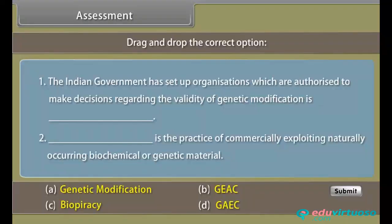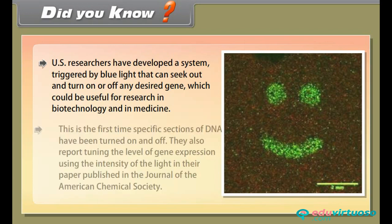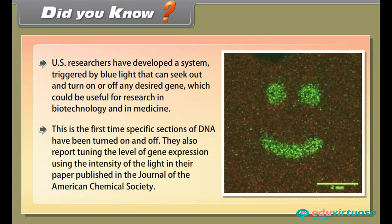Before proceeding further, let us assess how much you have learned. Drag and drop the correct option. Did you know? U.S. researchers have developed a system triggered by blue light that can seek out and turn on or off any desired gene, which could be useful for research in biotechnology and in medicine. This is the first time specific sections of DNA have been turned on and off. They also report tuning the level of gene expression using the intensity of the light, published in the Journal of the American Chemical Society.